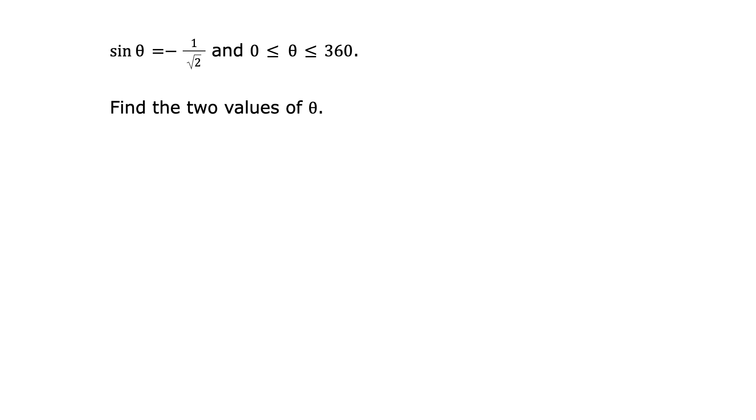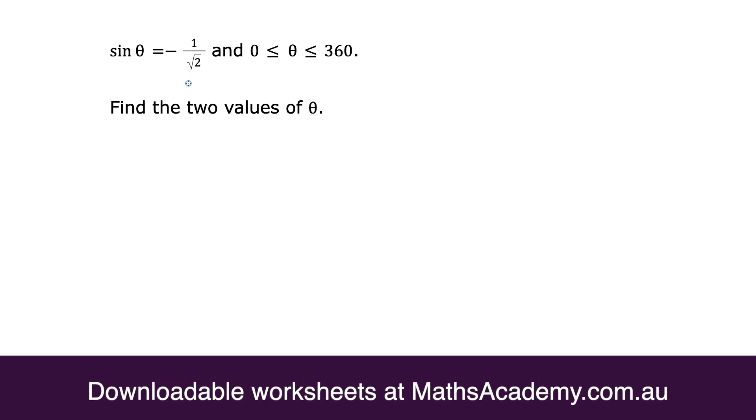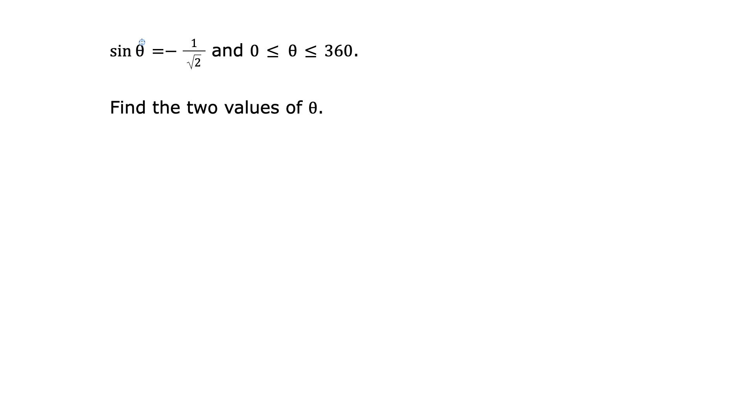Sine theta equals negative 1 over root 2, and theta lies between 0 and 360. We need to find the two values of theta that make this true. Now we don't have access to a calculator, so how do we figure out what the value of theta is?